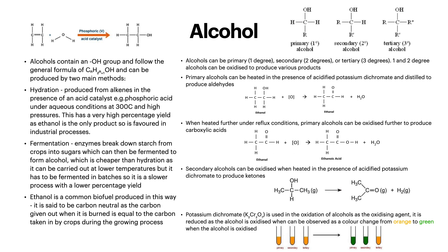Primary and secondary degree alcohols can be oxidised to form various products. Primary alcohols can be heated in the presence of acidified potassium dichromate and distilled to produce aldehydes. When heated further under reflux conditions, primary alcohols can be oxidised further to produce carboxylic acids. Secondary alcohols can be oxidised with acidified potassium dichromate to produce ketones. Potassium dichromate acts as the oxidising agent and is reduced as the alcohol is oxidised, observed as a colour change from orange to green. Tertiary alcohols are very difficult to oxidise, so there will be no colour change.